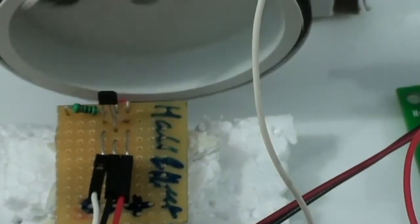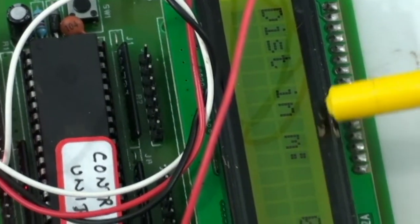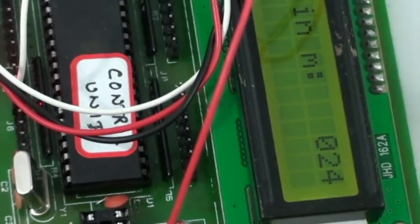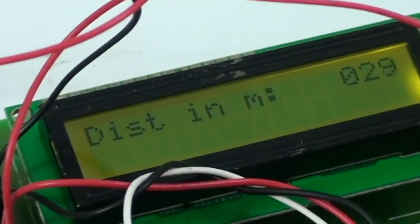It will vary the voltage level. Based on this fluctuation, we will increment the counter. Finally, based on the increment, it has been displayed on the LCD - how many rotations have been calculated and displayed on the LCD.